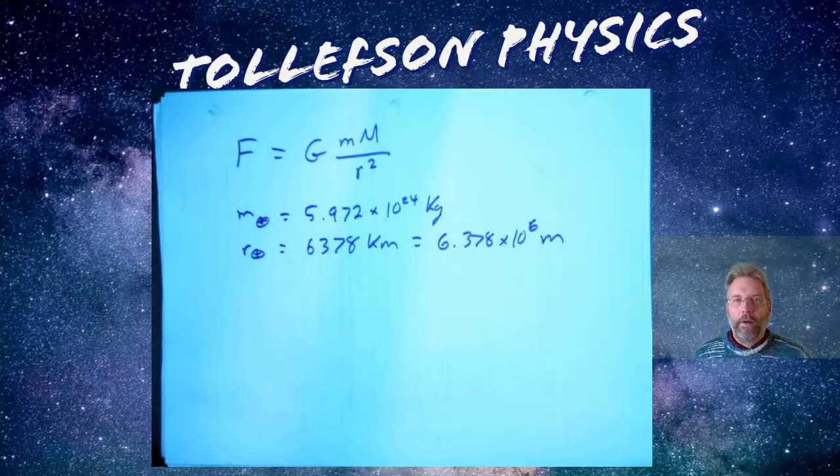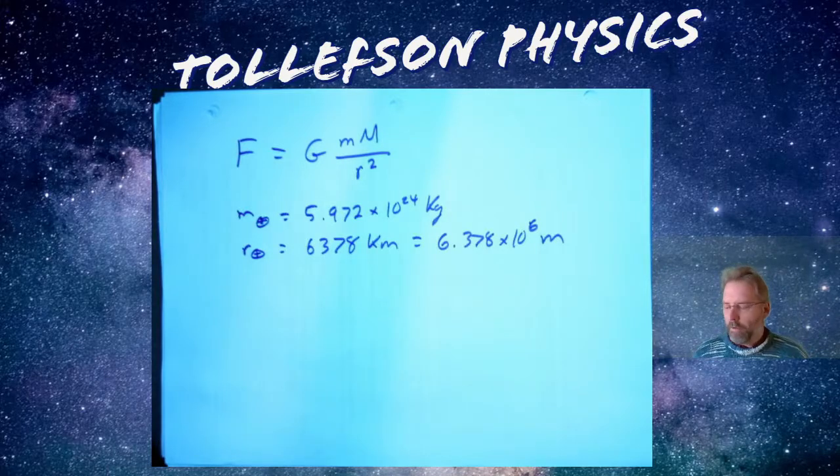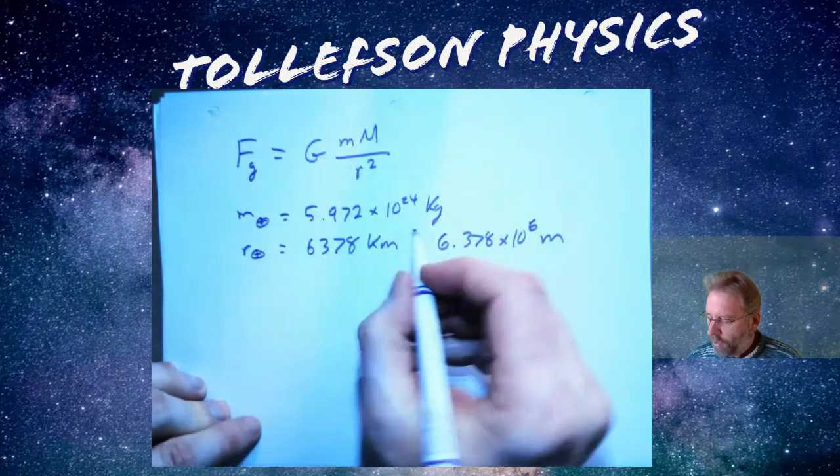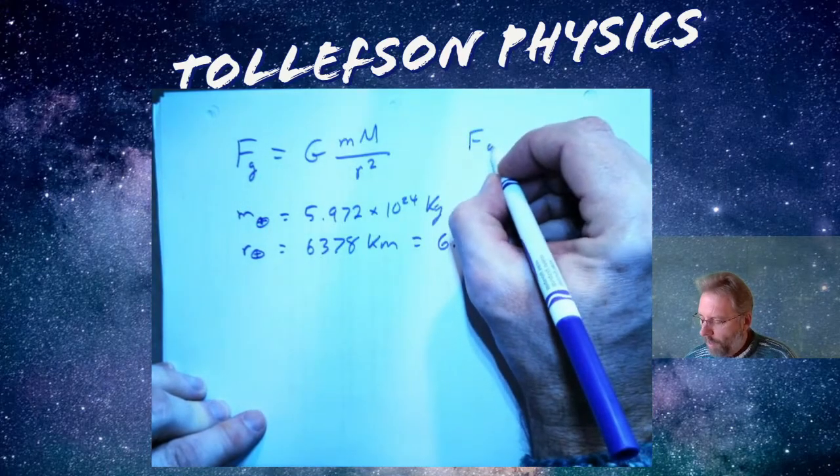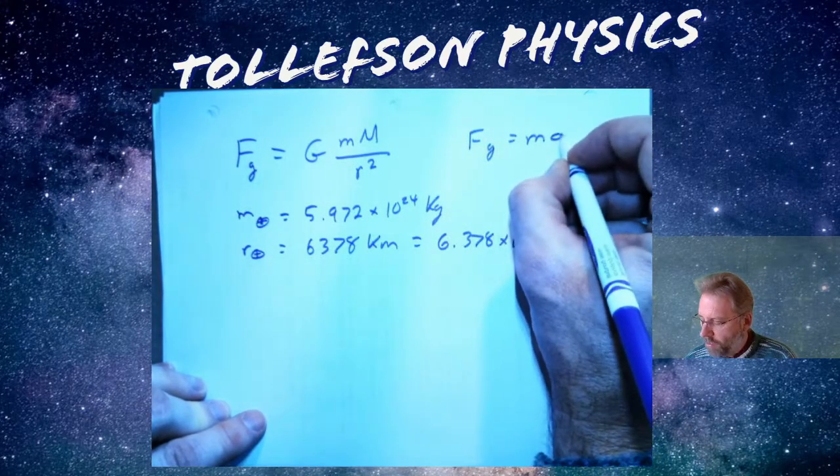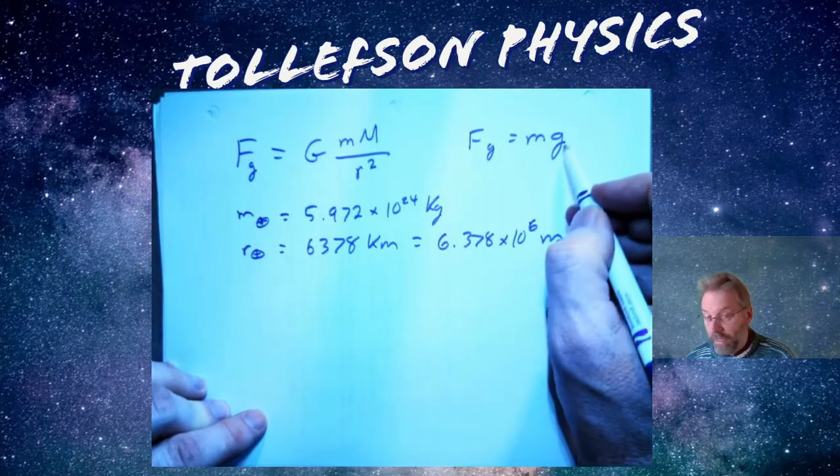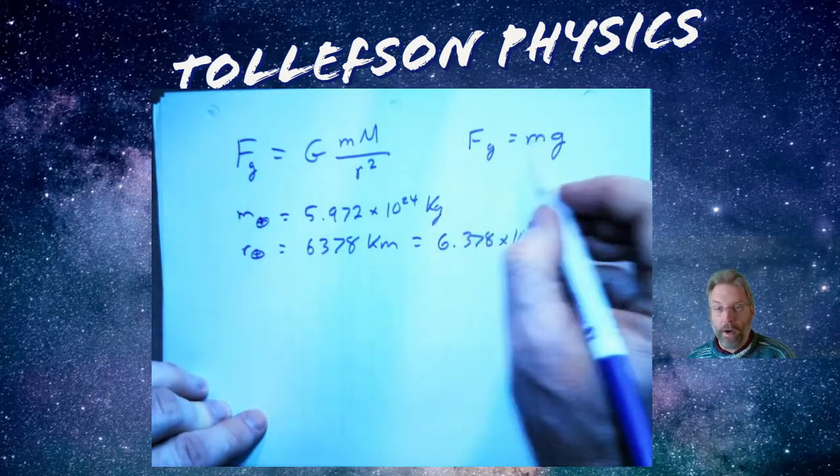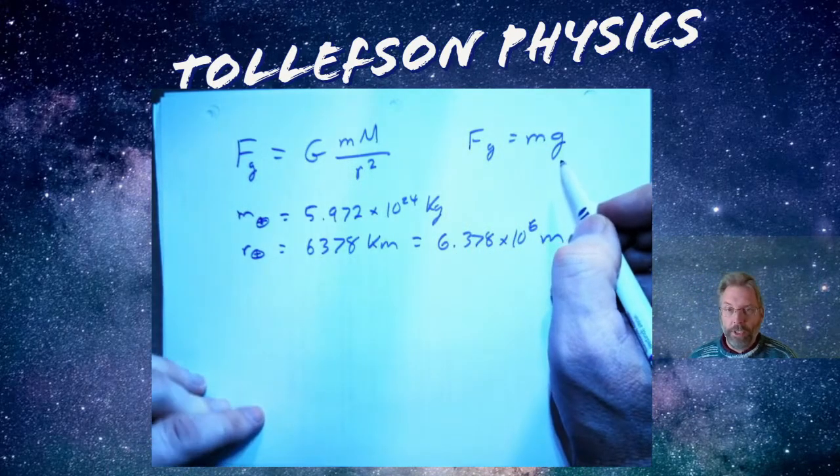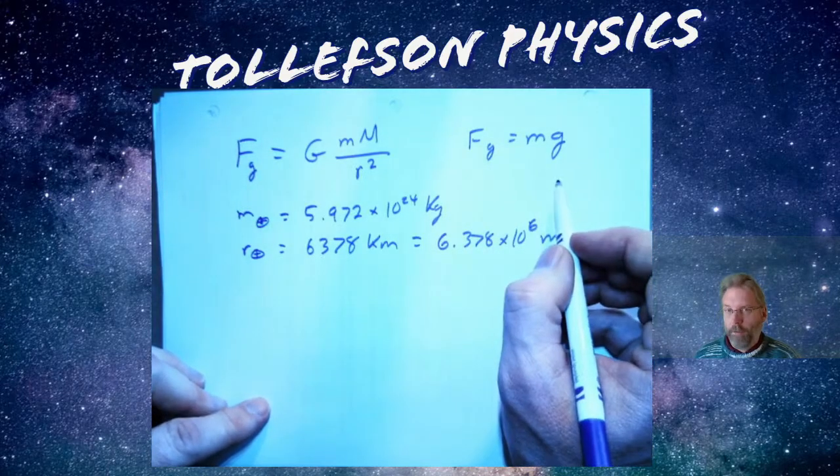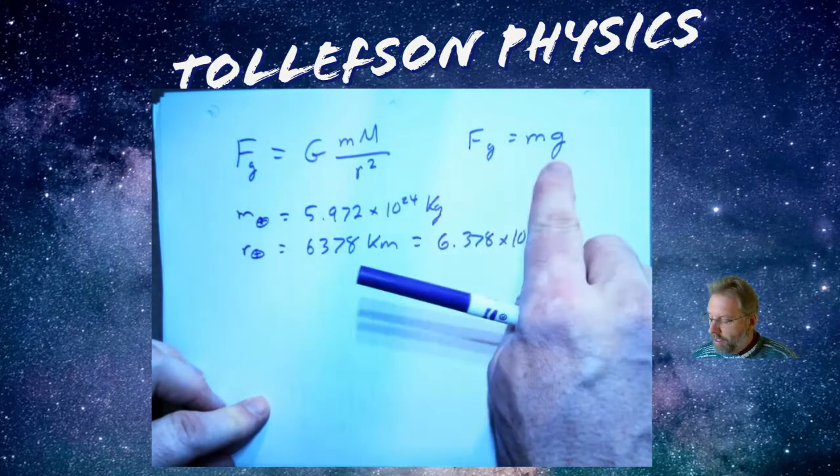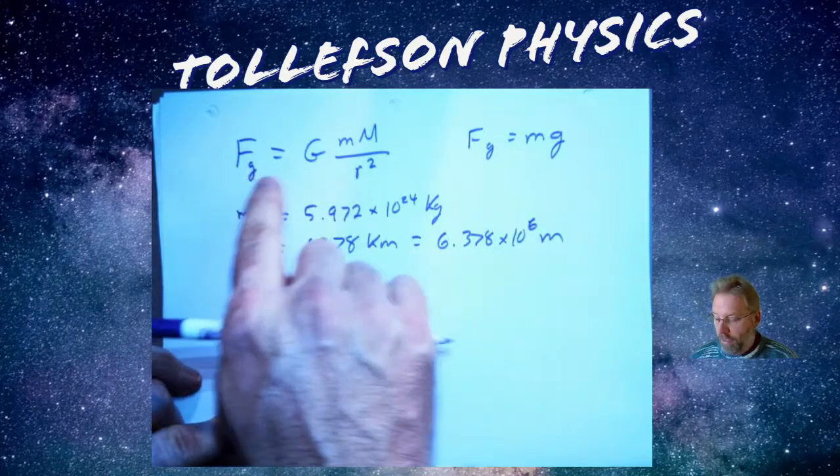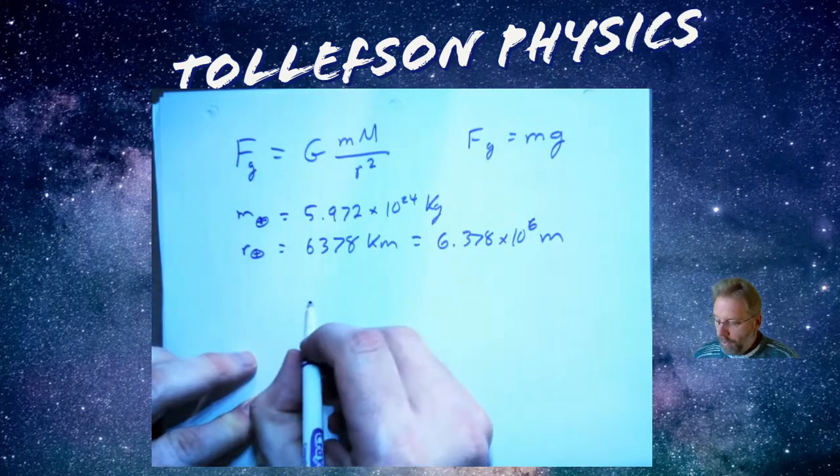But I want to know acceleration. So acceleration due to Earth's gravity. This is force due to gravity, and what we know on the surface of the Earth is that's 9.8. This could be anywhere if g changes - little g changes - but usually we're talking about the surface of the Earth.